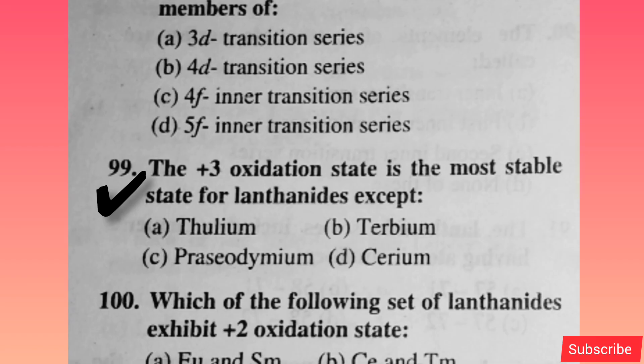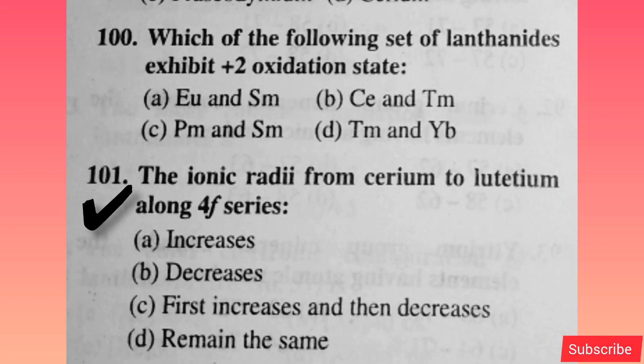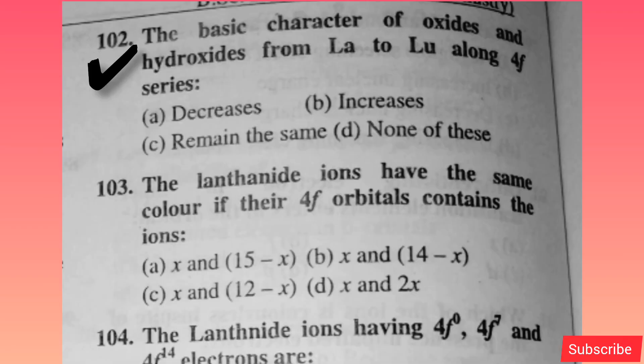Dysprosium and erbium are members of — option C is correct. The +3 oxidation state is the most stable state for lanthanides except — option D is correct. Which set of lanthanides exhibits a +2 oxidation state? Option A is correct. The ionic radii from cerium to lutetium along the 4f series — option B is correct.